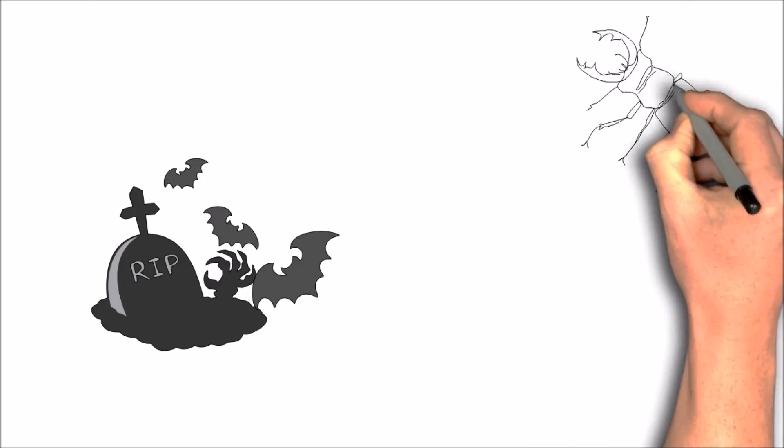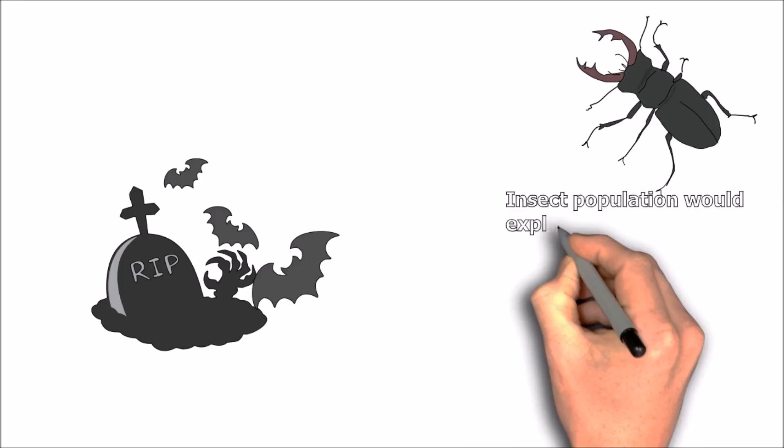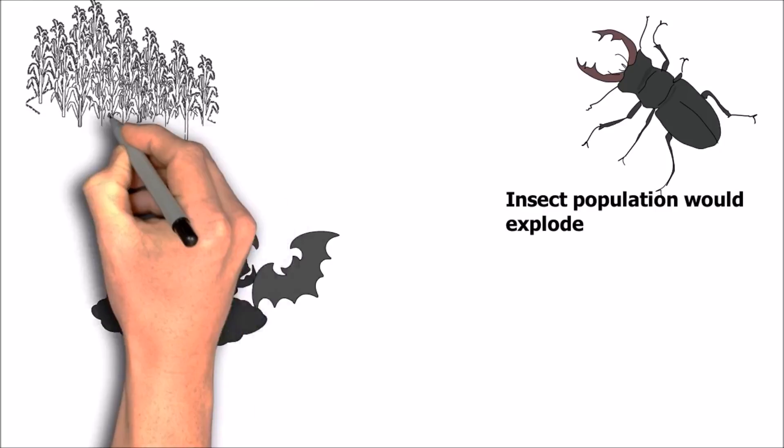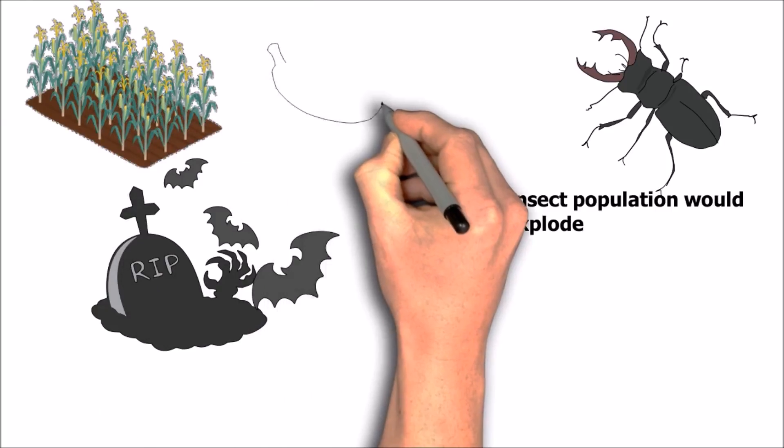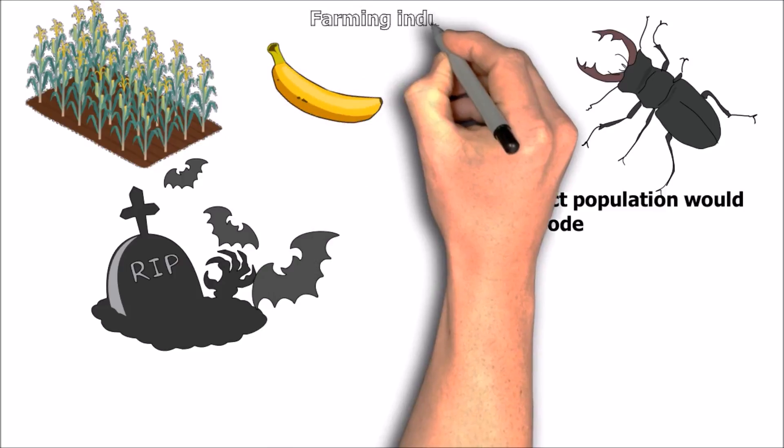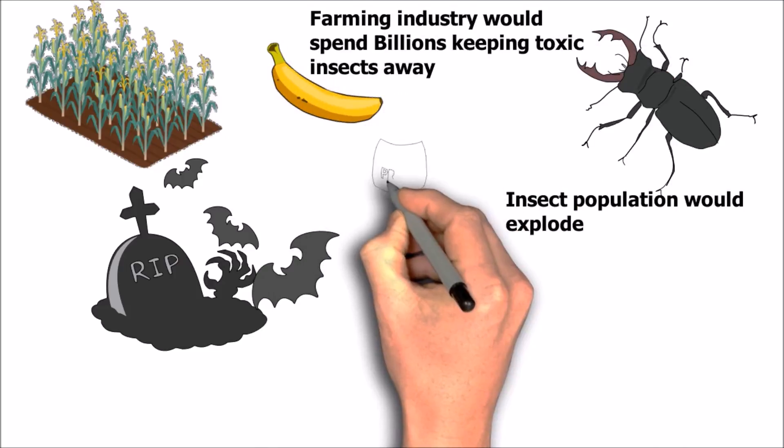So, just imagine what the world would be like without bats. The insect population would explode without those 1,000 insects getting eaten every hour at night. Just imagine, okay? And the toll it would take on farmers, they keep bad insects away.